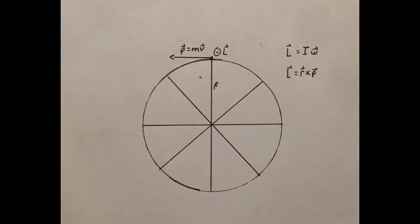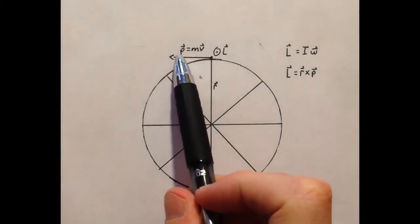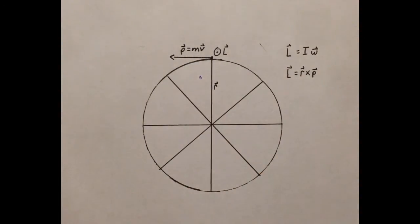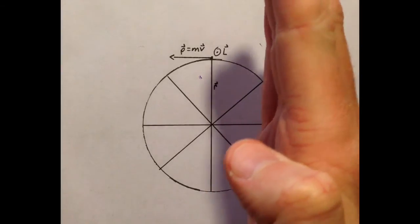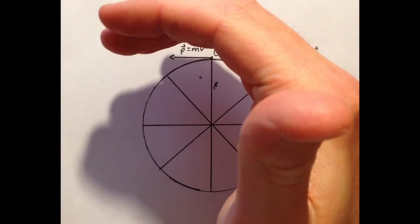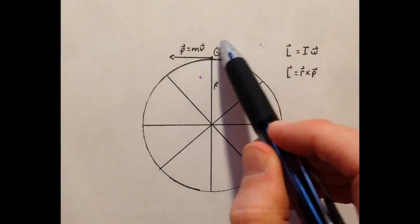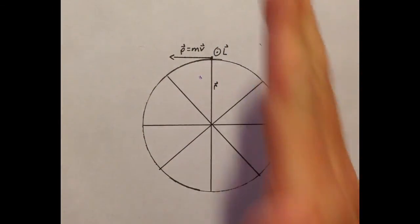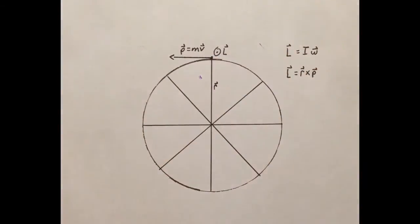Align your fingers with the radius, and then curl them towards the momentum vector, which points the same direction as the velocity vector. Align fingers, curl towards the momentum vector, stick out your thumb. The direction of your thumb is your angular momentum vector, which is pointing up out of the page.